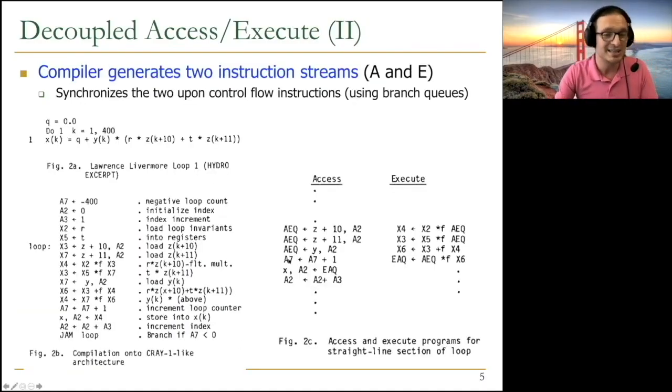Instead of having a single instruction stream, this is a very famous loop, Livermore loop, it does some scientific computation. You basically have two instruction streams, access and execute, essentially doing the same thing. Whenever you need to do memory access, you do it over here. Whenever you need to do operations, executions, and branches, you do it over here. Whenever you need to communicate a memory access result to the execute processor, you put it to the access to execute queue. The execute engine takes from that queue and could put the results into execute to access queue. Communication happens through these queues.